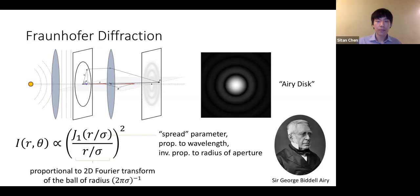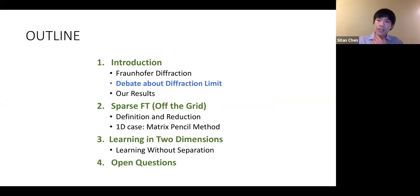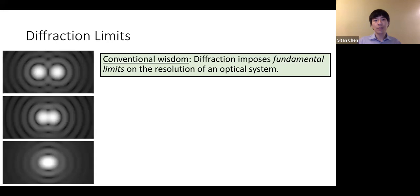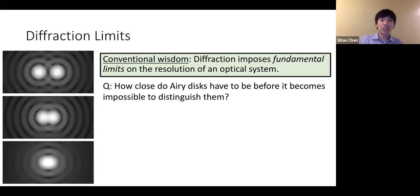Now let's move on to the notion of diffraction limit that is so central to our talk. A nugget of conventional wisdom from optics is that the phenomenon of diffraction should impose fundamental limits on the resolution of an optical system. Imagine I have a pair of point sources which, once imaged, generate a pair of Airy disks. As I move these point sources closer and closer together, at some point the blurring from the Airy point spread function makes it very difficult to discern which points on the image plane come from which point source.